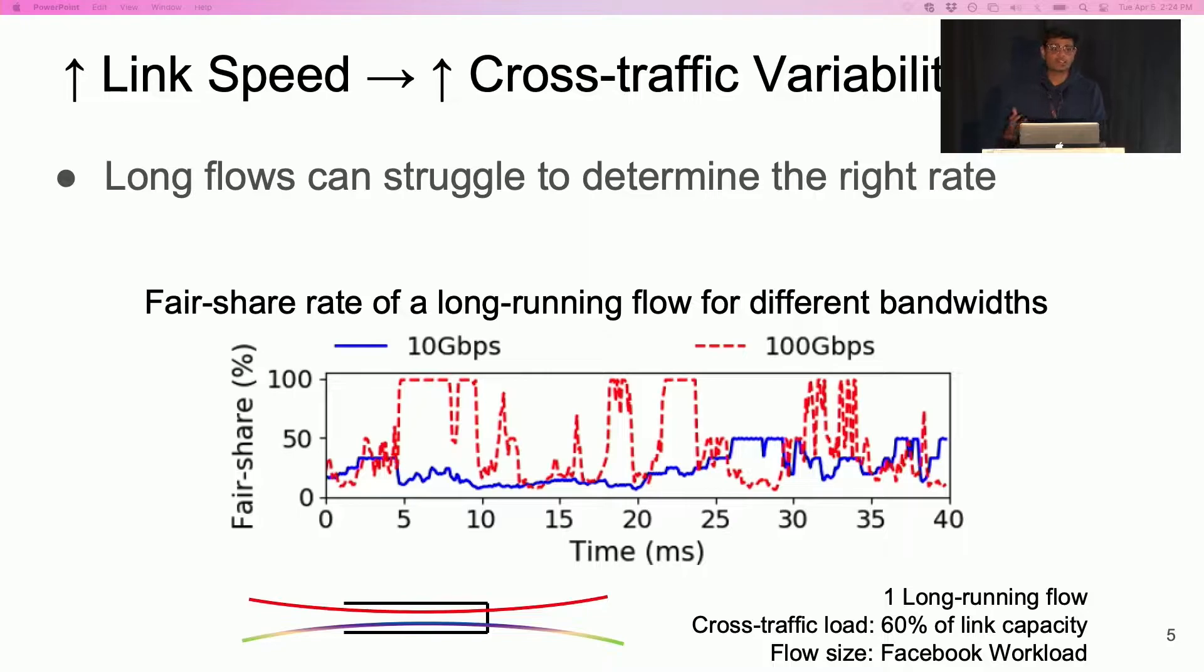We now repeat the first experiment across different link speeds. The top figure here shows the fair share rate of the long running flow relative to the link capacity. Notice that at 10 Gbps, the fair share rate is changing, but it is still relatively smooth.